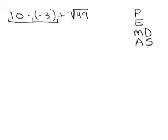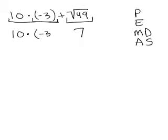So I really have some multiplication, some addition, and a square root. Where does square root fall in? Square roots are the same order as exponents, so we would do them right after parentheses, which means the square root is first. The square root of 49 is 7, because 7 times 7 is 49. So I'm going to put the 7 right underneath that, and then copy down the rest of the problem exactly how it is.